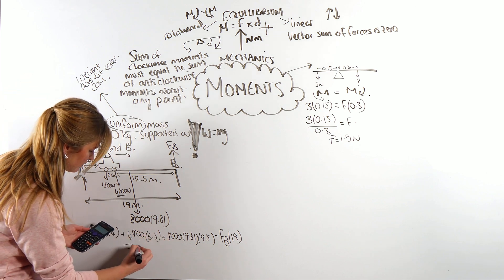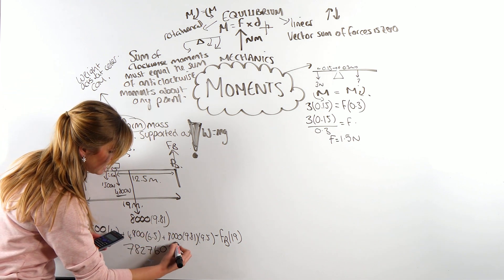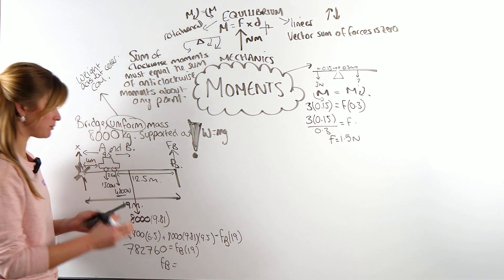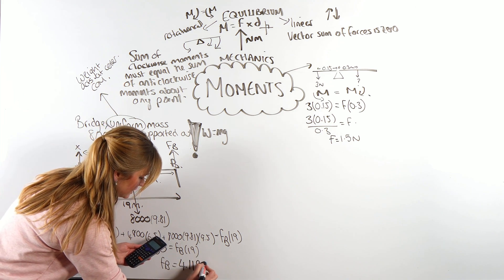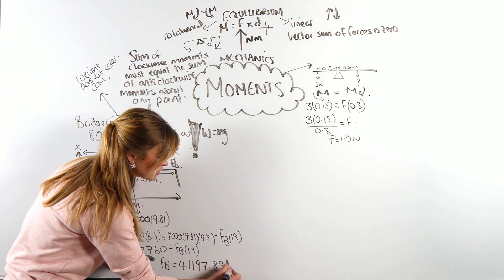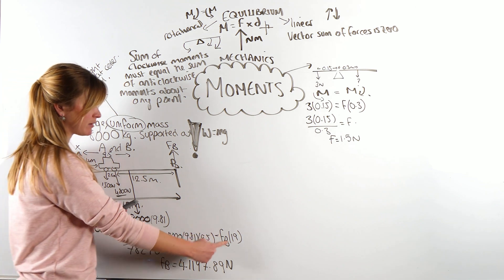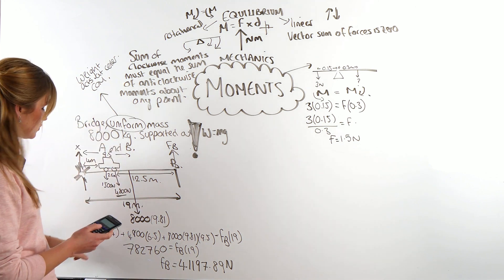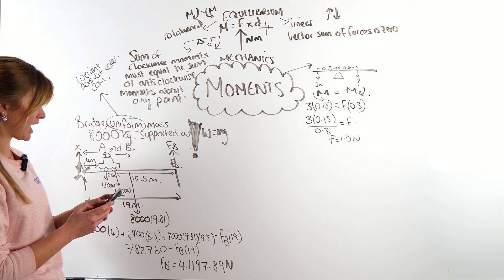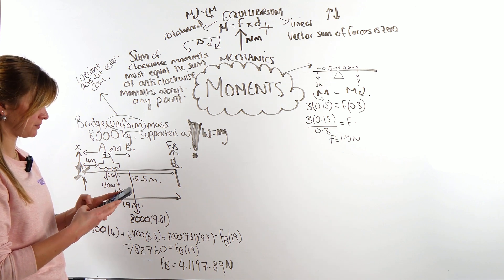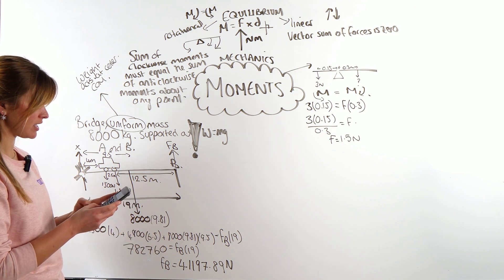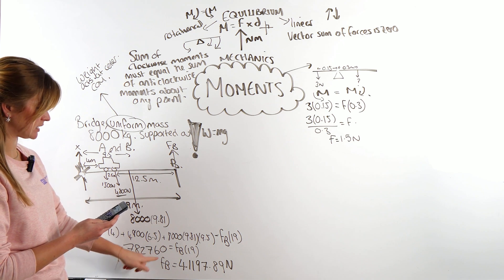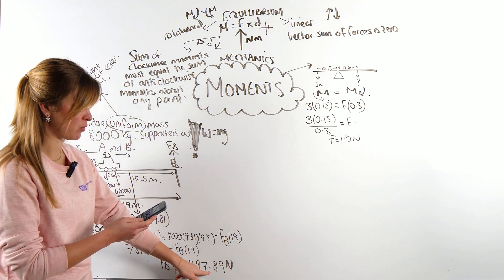So: (1,500 × 4) + (4,800 × 6.5) + (8,000 × 9.81 × 9.5) = force at B × 19. That gives 782,760 = B × 19, so force at B = 782,760 / 19 = 41,197.89 newtons. Always double-check your calculator input to avoid silly mistakes.